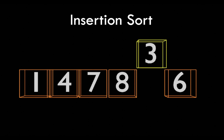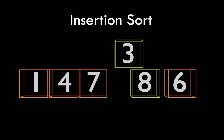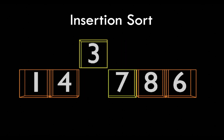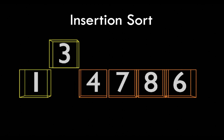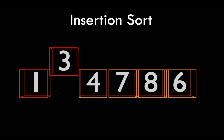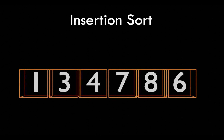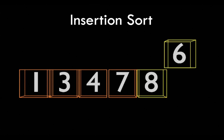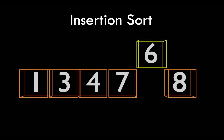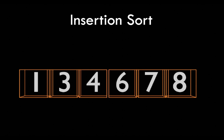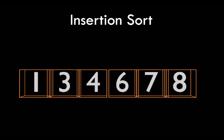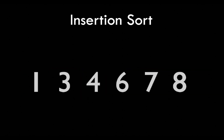We then take three and compare it with eight — a swap has to be made. We compare it with seven — another swap. We compare it with four — three is still less than four, so we swap. Then three is greater than one, so we put it in its rightful place. Last, six is less than eight and less than seven, but greater than four, so it gets put in the fourth position. You can see that the insertion sort sorts the list as it goes, placing numbers in the correct position upon each iteration.